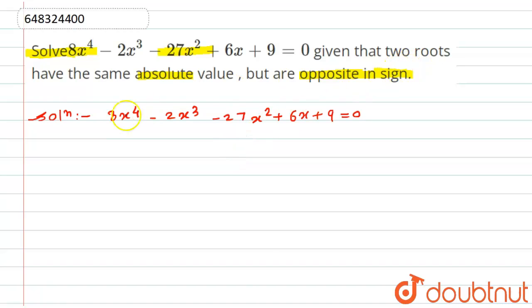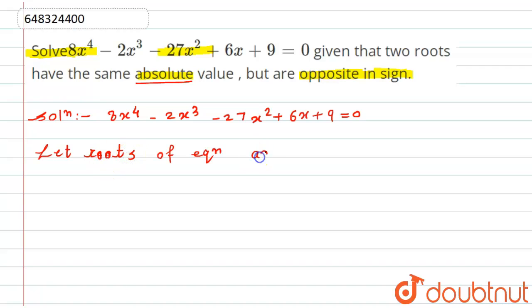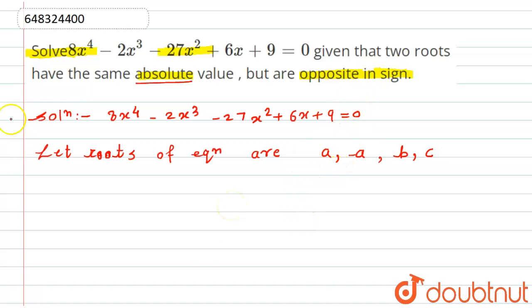It is given that two roots are of the same absolute value but are on opposite sides. So for this, we let the roots of the equation be a, minus a, b, and c, because two roots are the same but opposite in sign. That's why I have taken a and minus a here.